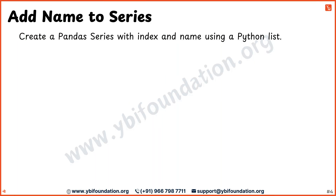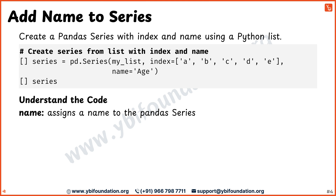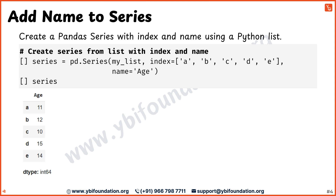Let's now see how to add labels to a pandas series. In this example, we are creating a pandas series from a list and adding a custom name. We use the name argument to give the series the label 'age'. This name or label will help identify the particular pandas series when working with multiple pandas series.